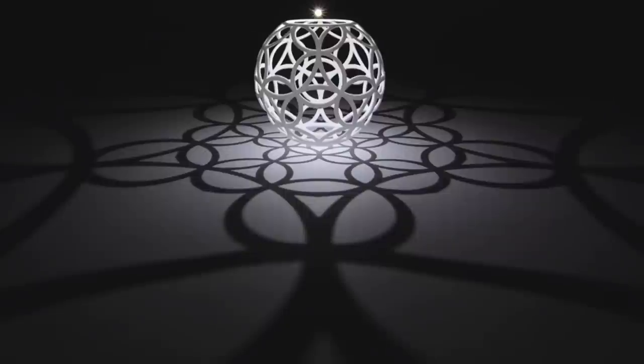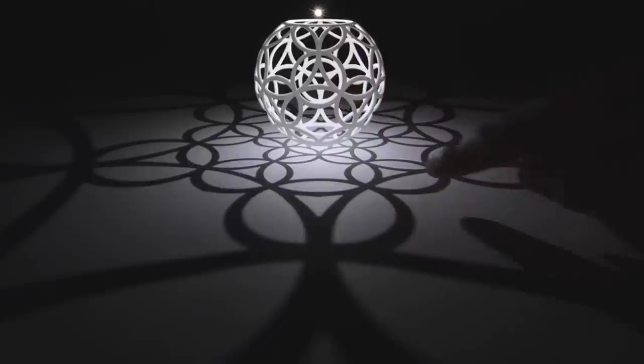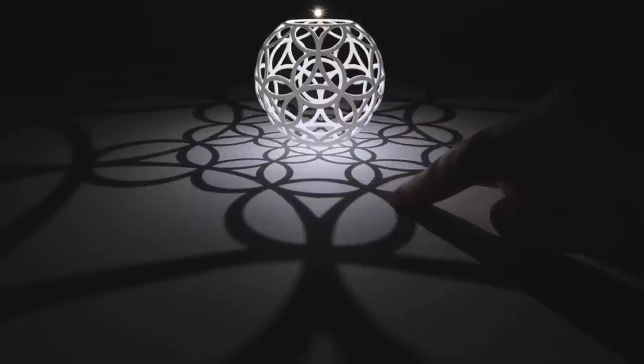The first is that it preserves angles. So in this case, all of these right angles on the sphere map down to right angles between these curves on the plane.